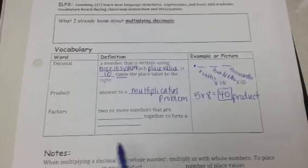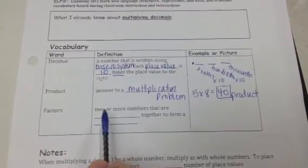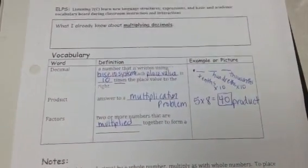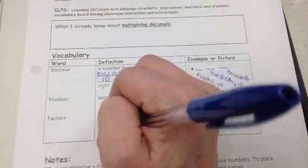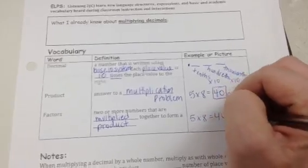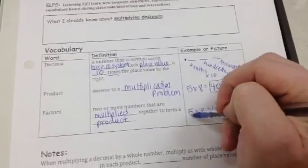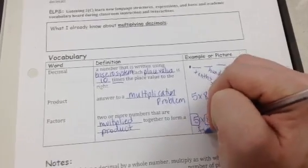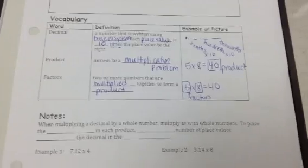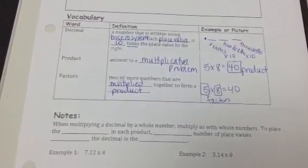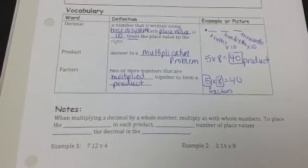Our next vocabulary word is factors. Factors are two or more numbers that are multiplied together to form a product. So 5 times 8 equals 40. 40 is our product, but the 5 and the 8 are our factors. These two right here are the factors. You multiply those together to create 40. Another one would be like 10 times 4. Those are factors that make a product of 40 as well. Or 2 times 20.